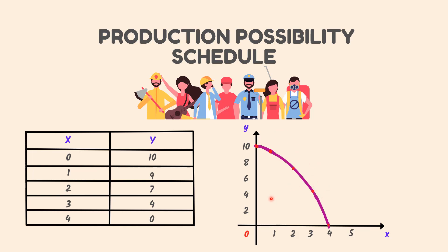Let F be a point to the left of AE. At this point, some amount of labor will remain unutilized. By full employment of labor, the country can move from F to any point on AE where the production of at least one commodity will increase. If there is full employment of labor but output is represented by F, then it should be understood that production has not been done efficiently. In that case, it is possible to increase the production of both goods by efficient utilization of labor. If the given amount of labor is fully utilized, the country can produce any combination of X and Y on the AE curve. Hence, to determine the production levels of two goods means to determine the point on the production possibility curve at which the country will stay.